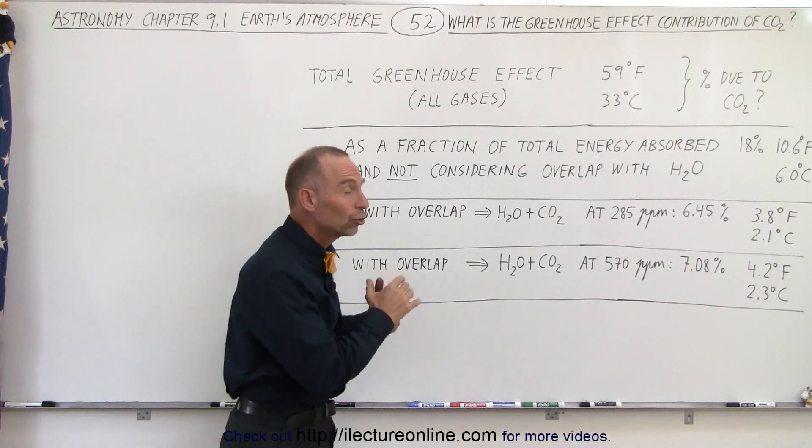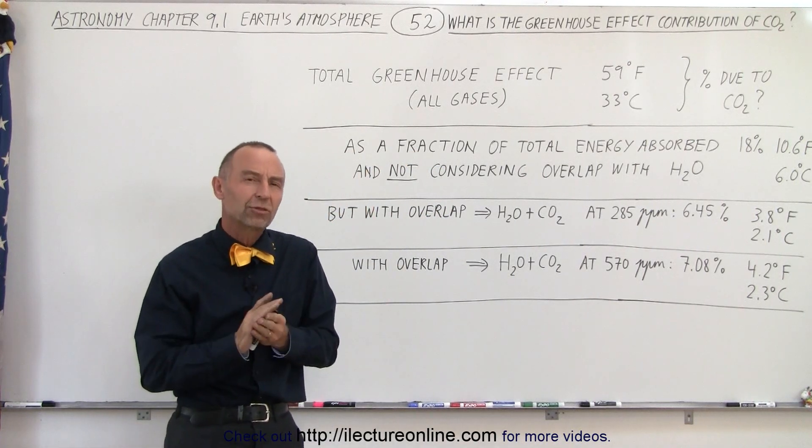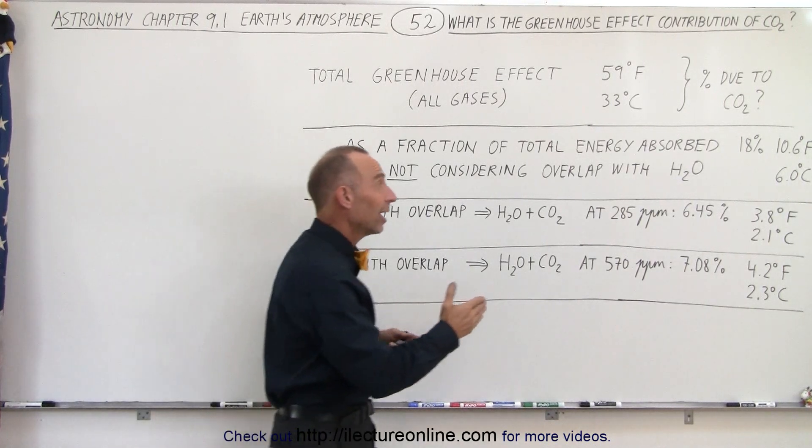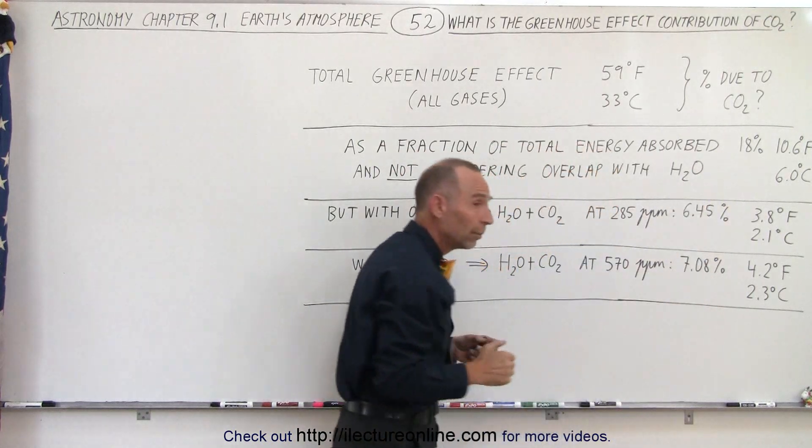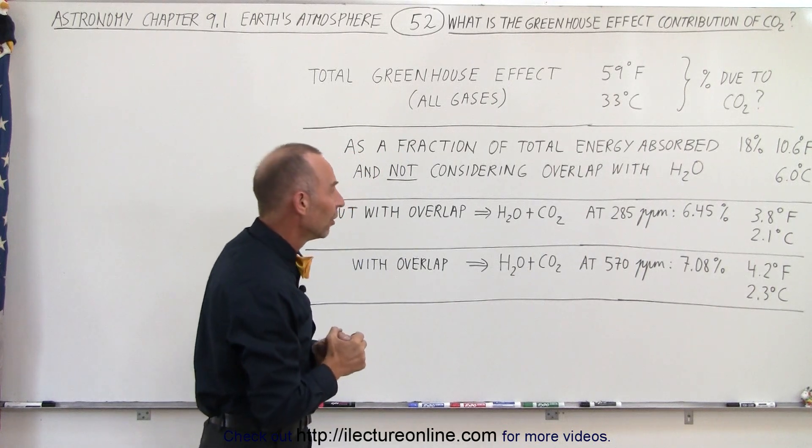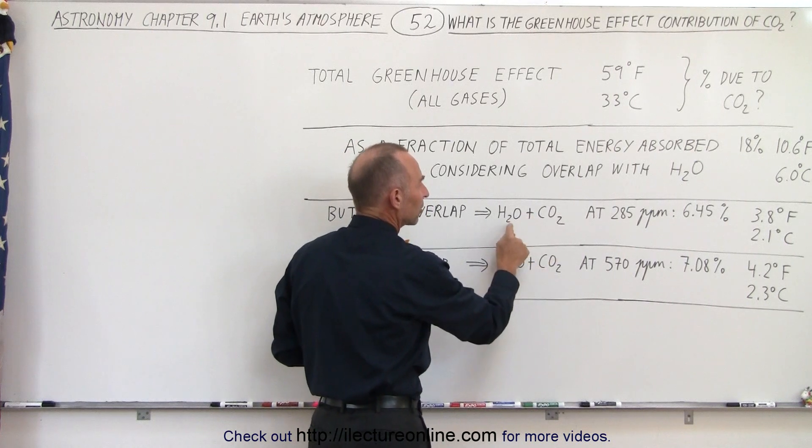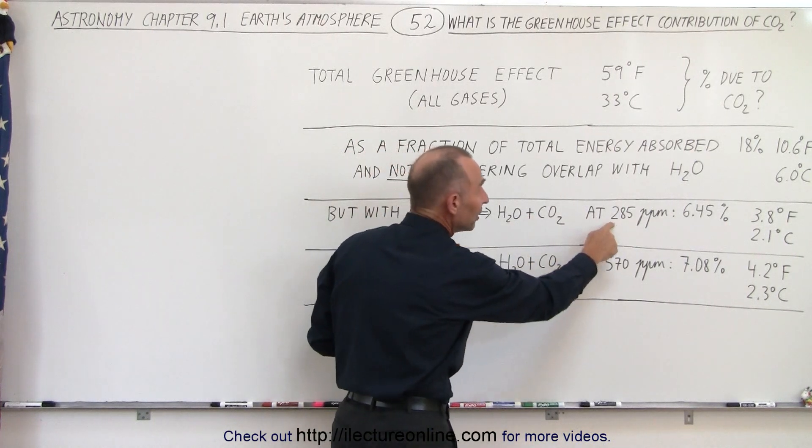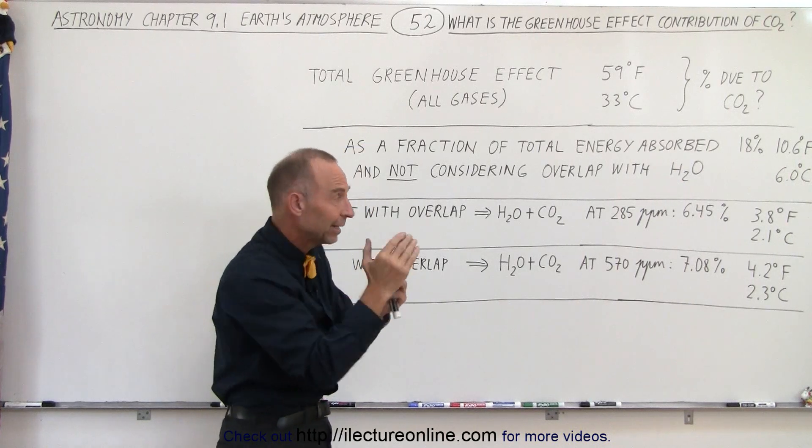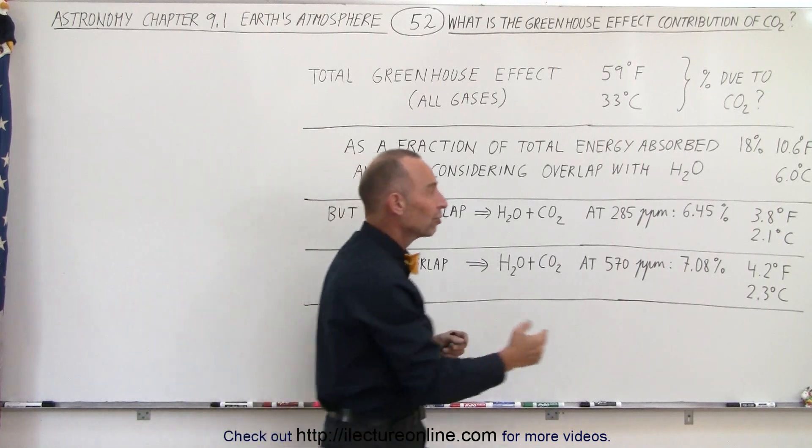That's a significant contribution due to carbon dioxide, but then we realize that's not the whole picture because there's an overlap between carbon dioxide and water vapor. Carbon dioxide is not responsible for all that absorption because water vapor has already absorbed a vast amount of that. So when we look at the overlap, we realize there's a big overlap between carbon dioxide and water vapor. At 285 parts per million, the contribution alone, that's that slice there that was not able to be absorbed by water vapor that we saw in the previous video, that accounts for about 6.45% of all the radiation absorbed by all the gases.